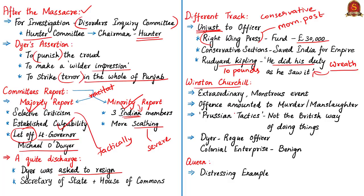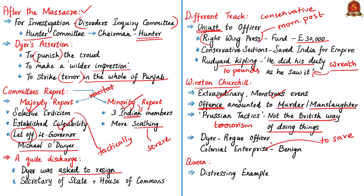Winston Churchill called Dyer's deed at Jallianwala Bagh an extraordinary event, a monstrous event, an event which stands in sinister isolation. Privately, Churchill also wrote that the offence amounted to murder or alternatively manslaughter. Significantly, Churchill compared the event to Prussian tactics of terrorism and said it was not the British way of doing things—resorting to British exceptionalism—and to save the larger colonial enterprise as benign, he stated Dyer as a rogue officer.